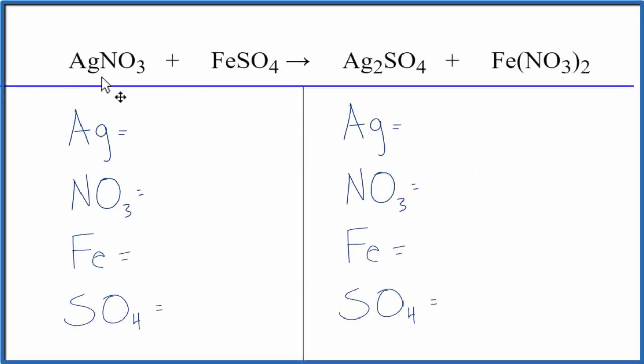In this video we'll balance the equation AgNO3 plus FeSO4, that's silver nitrate plus iron 2 sulfate. Let's count the atoms up on each side of the equation.